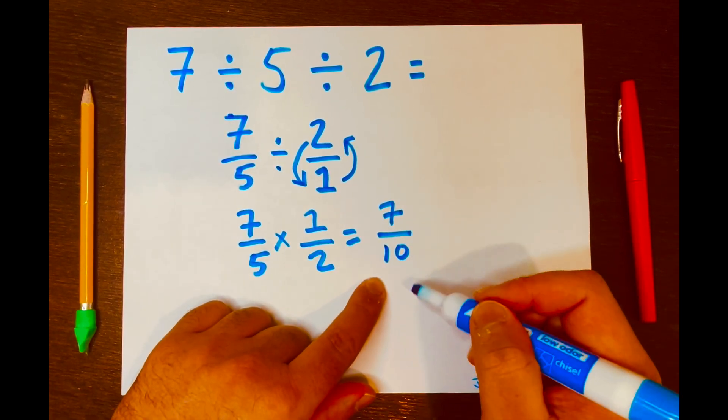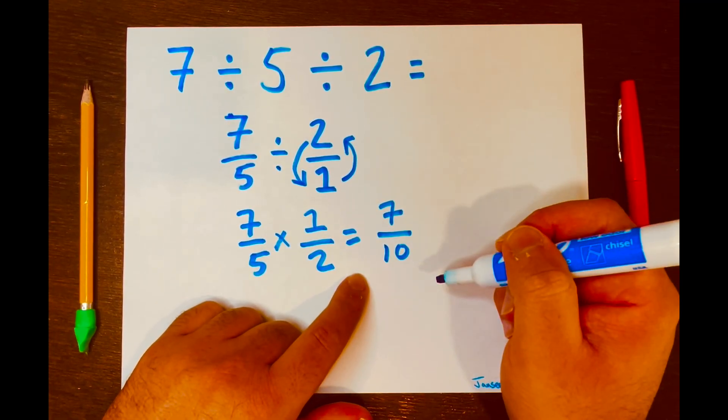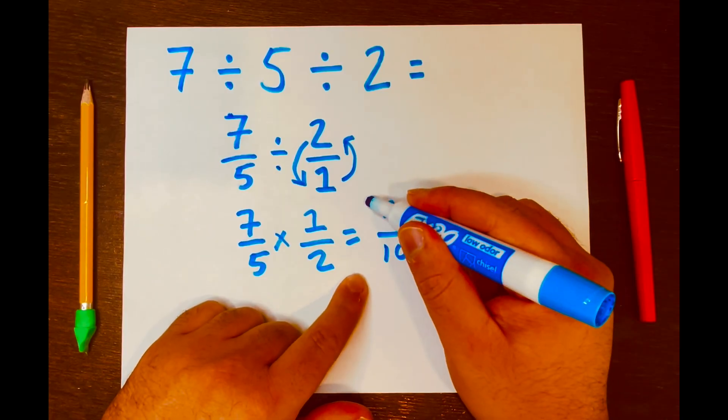So now we have a fractional answer, a proper fraction, 7 over 10. And we cannot simplify this further. And this will be it.